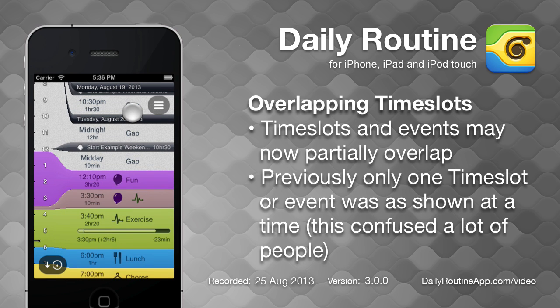We can now also see another new feature of Daily Routine 3: overlapping time slots. Daily Routine 3 now supports overlapping time slots and calendar events, so we can always see what's on, even when there's a lot on.